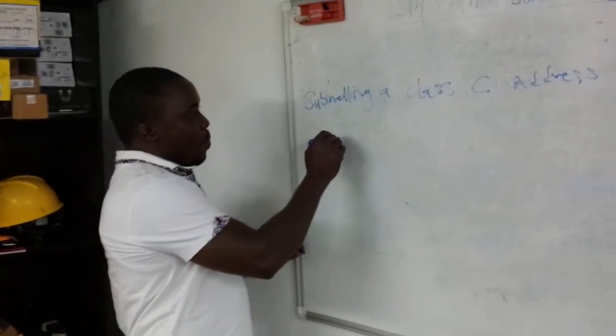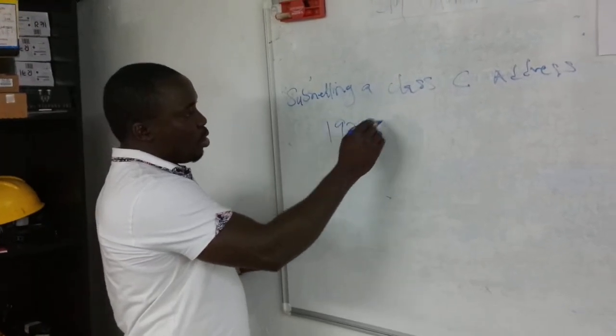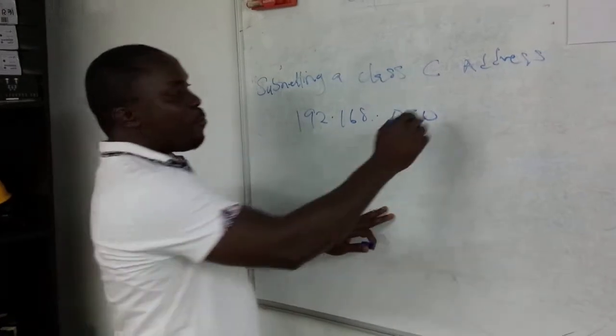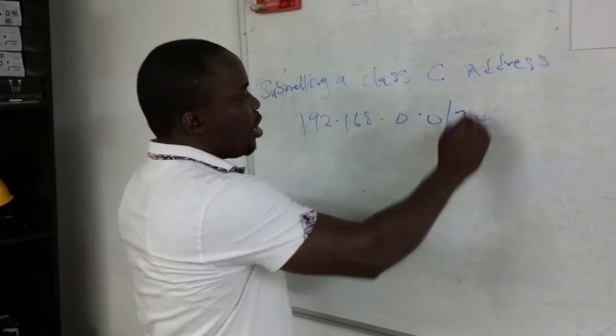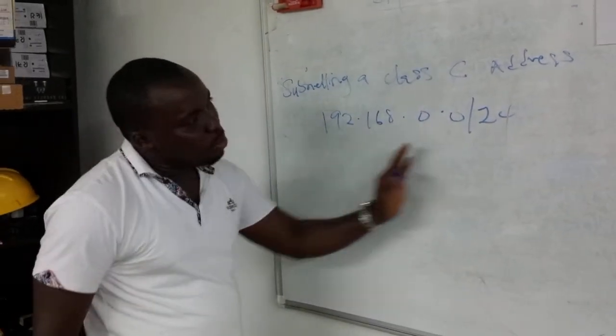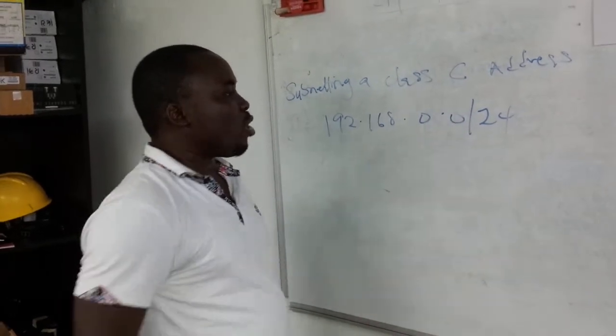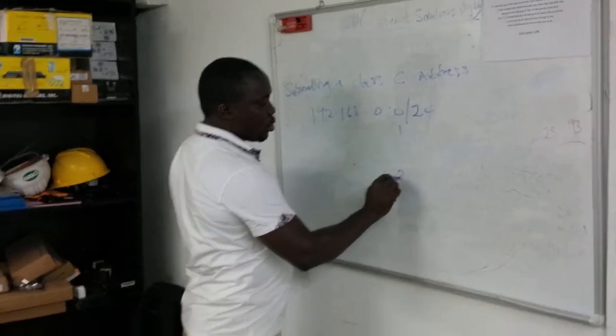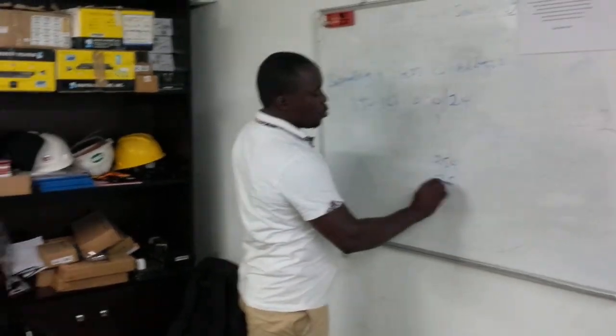So we are going to pick a Class C IP address, 192.168.0.0. Normally, the default subnet mask for Class C is /24. Assuming you are not doing any subnetting, this is going to give you IP addresses from 1 to the last valid one, which is 254, and the broadcast is 255. But everything here will be on the same network.